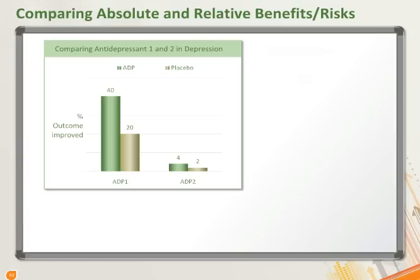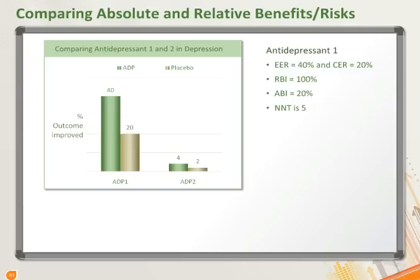In the first study for ADP1, the EER is 40% and the CER is 20%. The relative benefit increase is 1, which expressed as a percentage is 100%, and the NNT is 5.